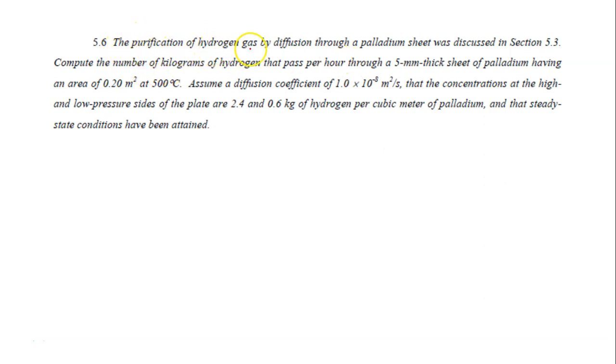The question says: the purification of hydrogen gas by diffusion through a palladium sheet was discussed in section 5.3. Compute the number of kilograms of hydrogen that pass per hour through a 5 mm thick sheet of palladium having an area of 0.2 m² at 500°C. Assume a diffusion coefficient of this value, that the concentrations at the high and low pressure sides of the plate are 2.4 and 0.6 kg of hydrogen per cubic meter of palladium, and that steady-state conditions have been attained.